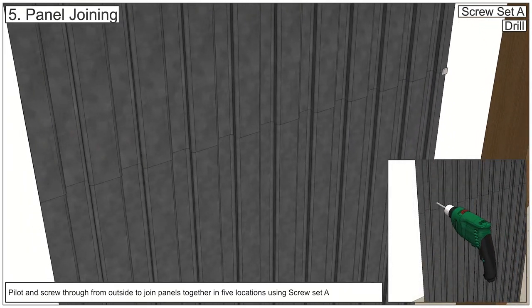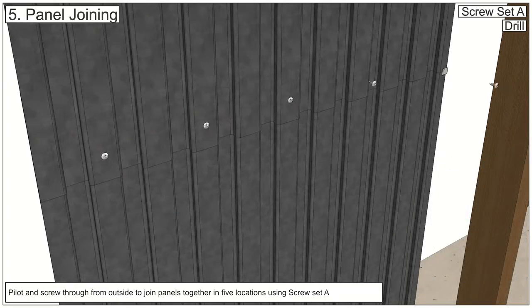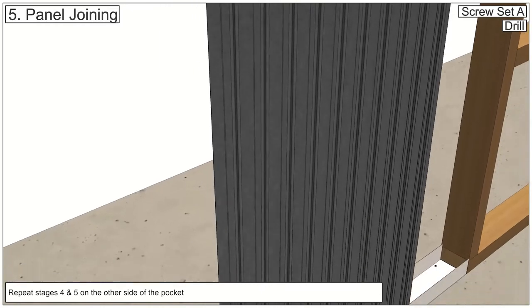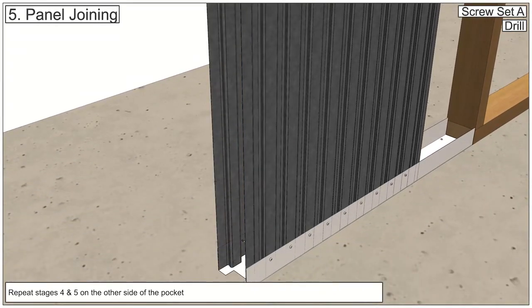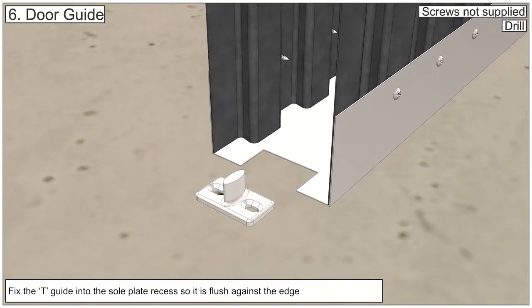Pilot through Z sections where they overlap. Use appropriate fixings to fix metal floor guide to the floor.